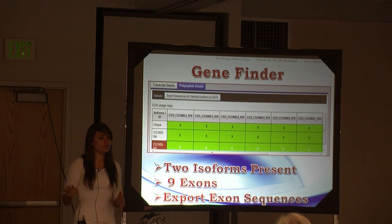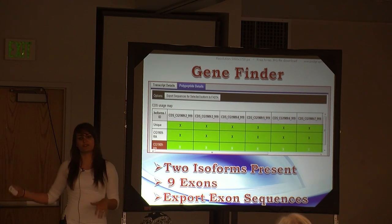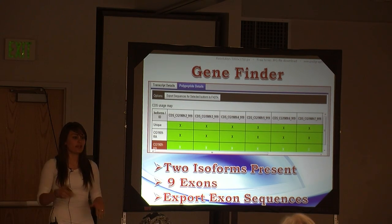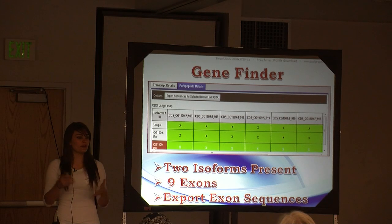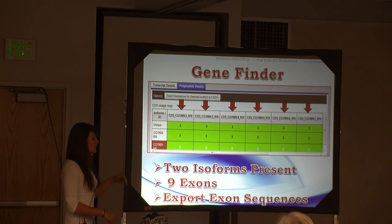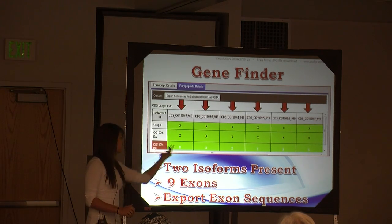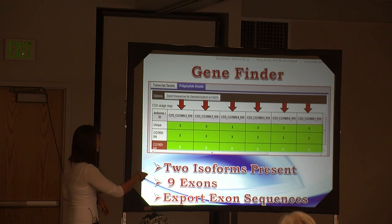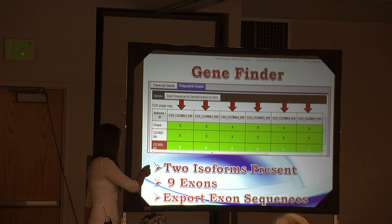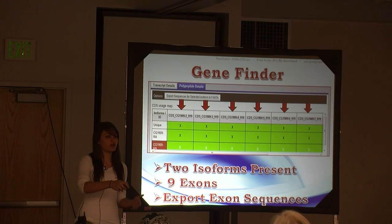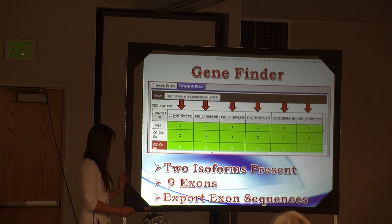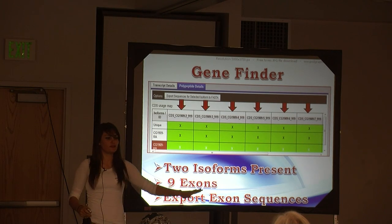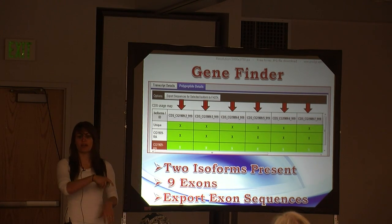Next we look at the gene finder to see if our genome browser is matching up to the correct gene for the melanogaster sequence. Remember we are looking at Drosophila mojavensis — two different species — and then we compare the two. We notice that we have nine exons and two isoforms present, so our mojavensis genome browser is matching up with the melanogaster sequence, which is very good. We will export this exon sequence from melanogaster and compare it to mojavensis.